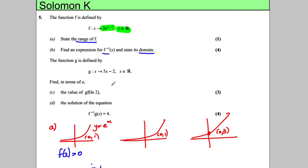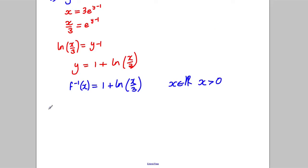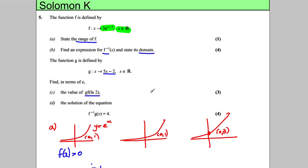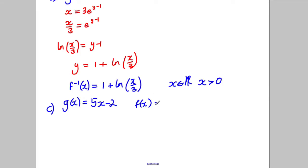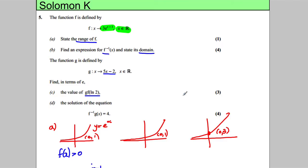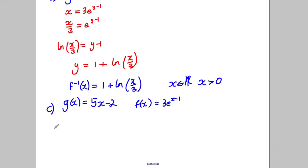We've got a new function now, which is linear, 5x take away 2. Find in terms of e, g(f(ln2)). So let's state for part c what g is again. g equals 5x-2. And let's write what f(x) is again. f(x), what is that? 3e^(x-1). And we're asked to work out g(f(ln2)).